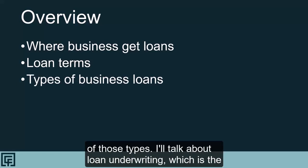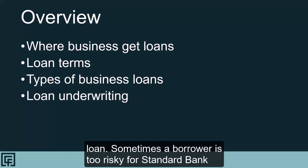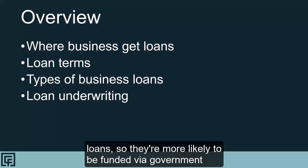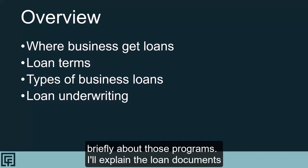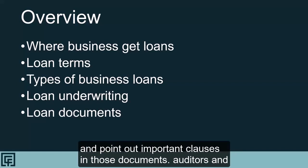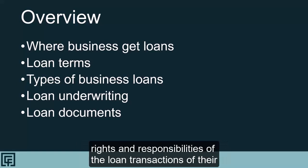We'll go through different types of business loans and the appropriate uses of those types. I'll talk about loan underwriting, which is the process and criteria lenders use to decide whether to grant a loan. Sometimes a borrower is too risky for standard bank loans, so they are more likely to be funded via government programs like Small Business Administration loans. I'll talk briefly about those programs and explain the loan documents, pointing out important clauses. Auditors and accountants need to understand these documents to know the rights and responsibilities of the loan transactions of their client or employer.